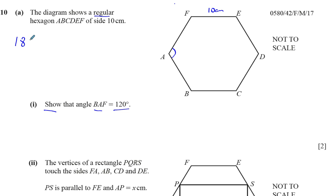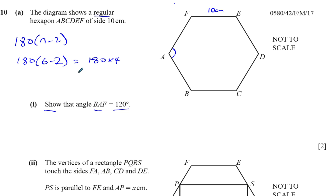One way is if we know the formula for the sum of the interior angles in a regular hexagon — it's always 180 times (n minus 2), where n is the number of sides. So that's 180 times (6 minus 2), which is 180 times 4, which equals 720 degrees. Since all angles are equal, divide by 6 to get 120 degrees.